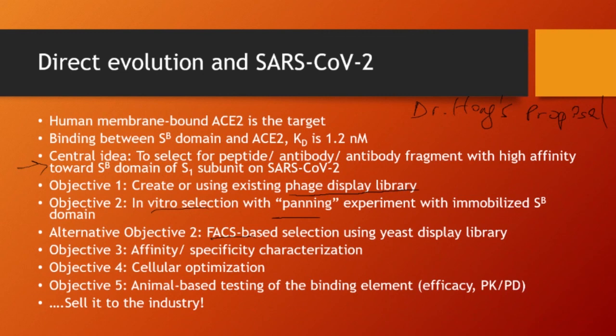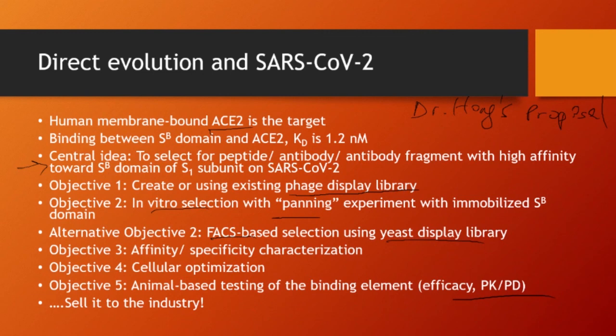You start with some type of library — you can create one or buy one. Then you do in vitro selection with panning technology, or you can use fluorescent-activated cell sorting using a yeast library or phage library. Then affinity and specificity characterization, as always. What you are finding is really a molecular binder — either an antibody fragment or full-length antibody — that can bind to the SB domain so it won't bind to our ACE2. There you have your therapeutic agent. Then you sell it to industry. In academia, it's very difficult to carry an investigational drug from start to finish purely in the lab.